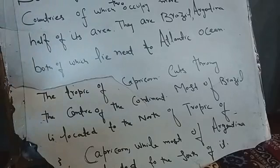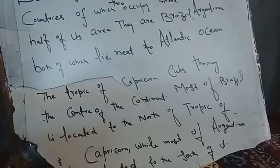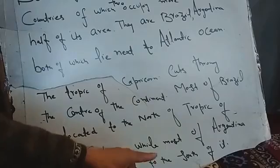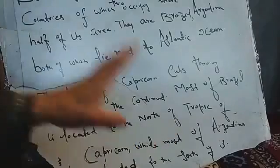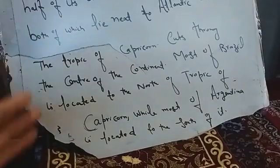On the other hand, Argentina is different. About 99% of Argentina's area lies to the south of the Tropic of Capricorn. So most of Brazil is north of the Tropic of Capricorn, while most of Argentina is located to the south of the Tropic of Capricorn.